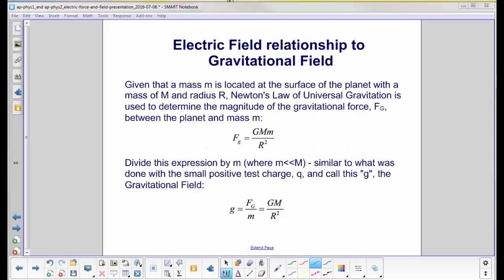Given that a mass m, and note the similarity of this mass m to the test charge we use for defining electric field, we've got this mass located at the surface of a planet that has a mass of big M and a radius R. Newton's law of universal gravitation finds the gravitational force. R is the distance between the center of the Earth and the object's center. The object is so tiny, so it's really just to the object.